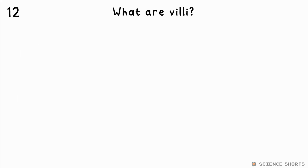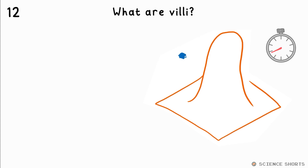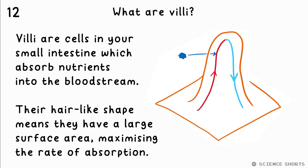Question 12. What are villi? Villi are the cells in the small intestine that absorb nutrients into the bloodstream. They are hair-like in order to have a large surface area to increase the rate of absorption.